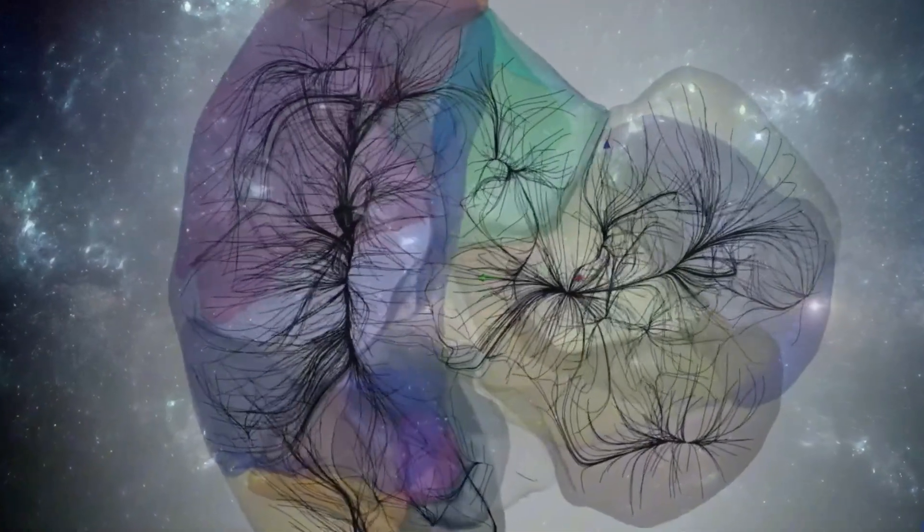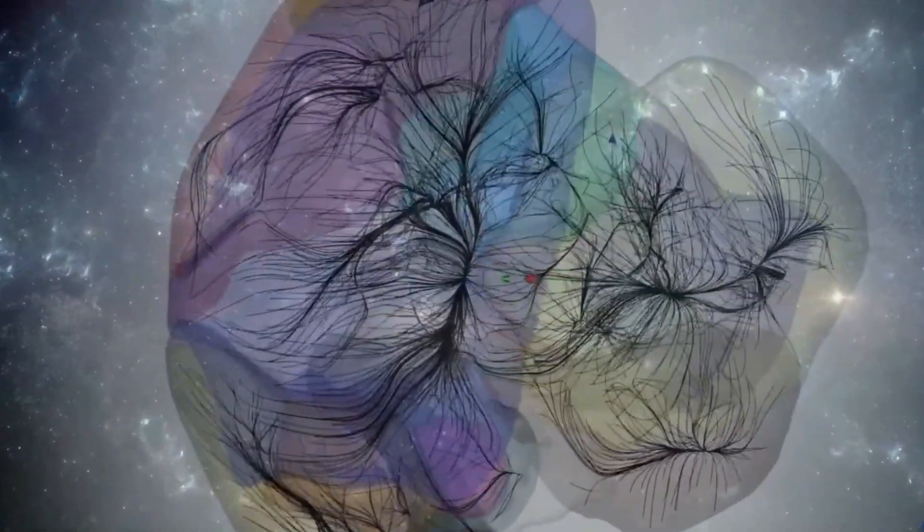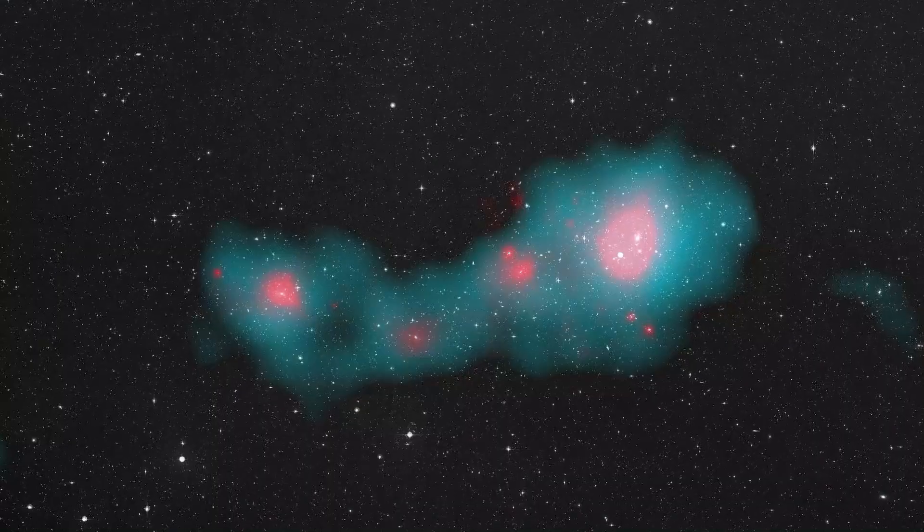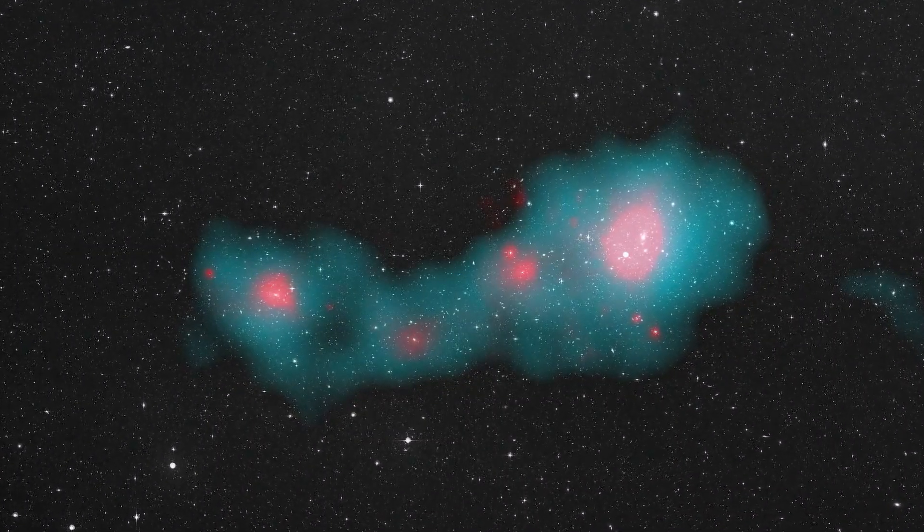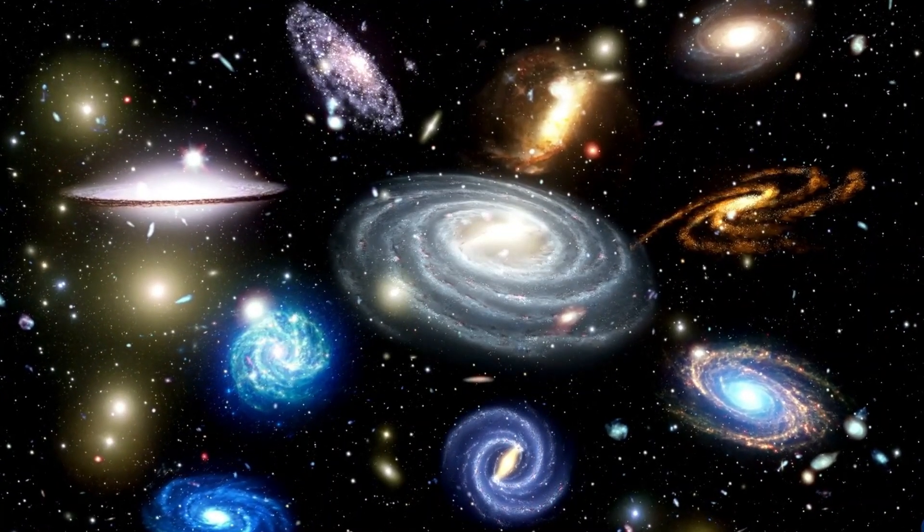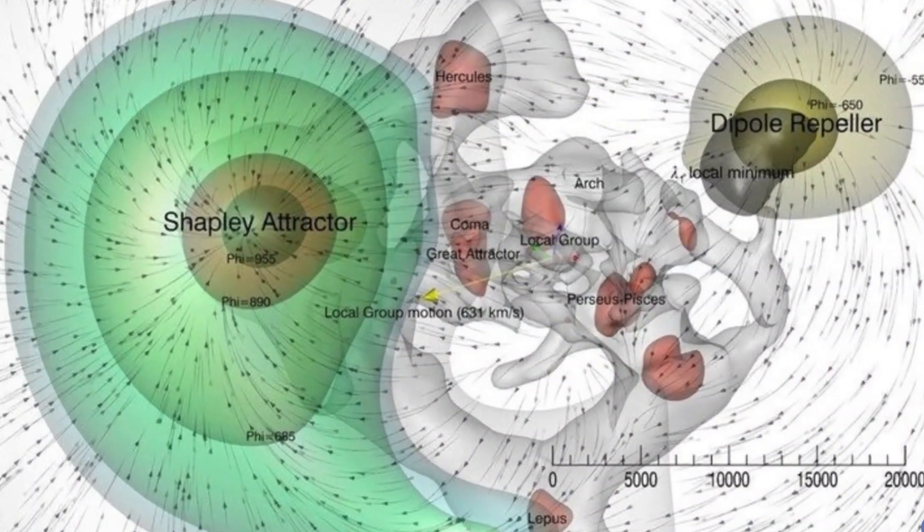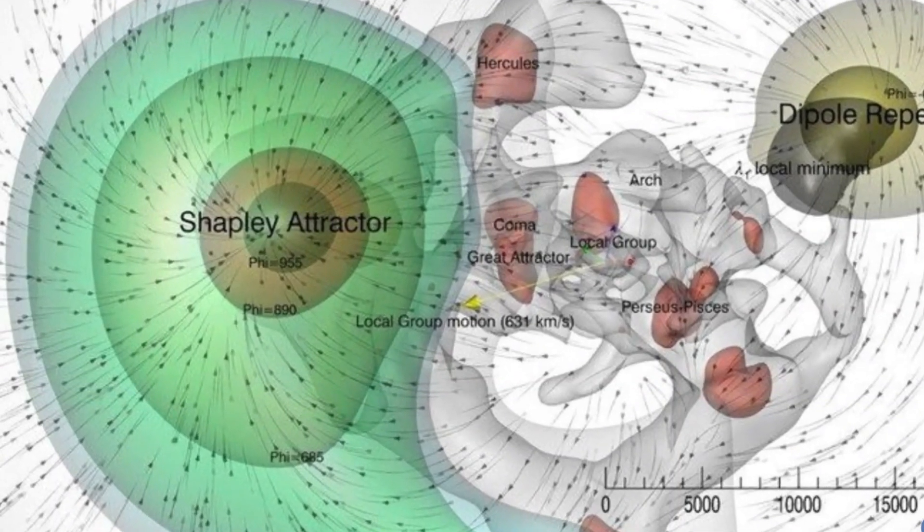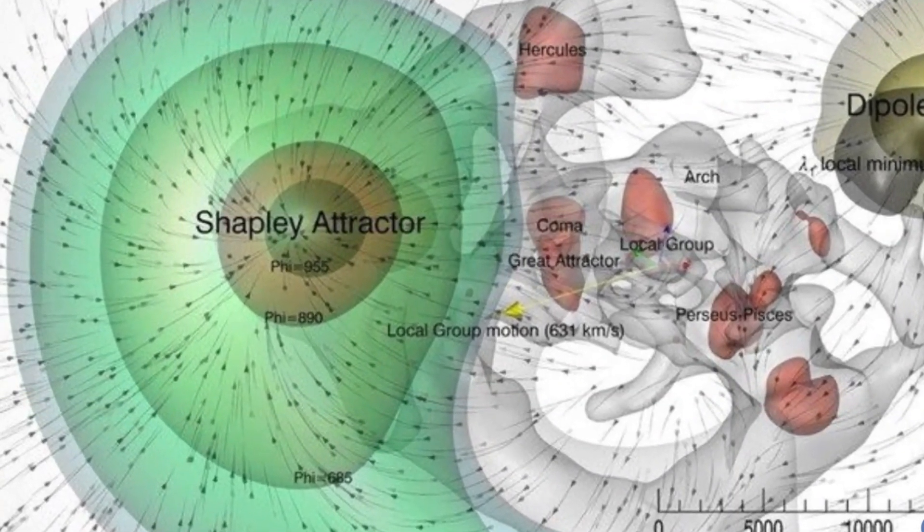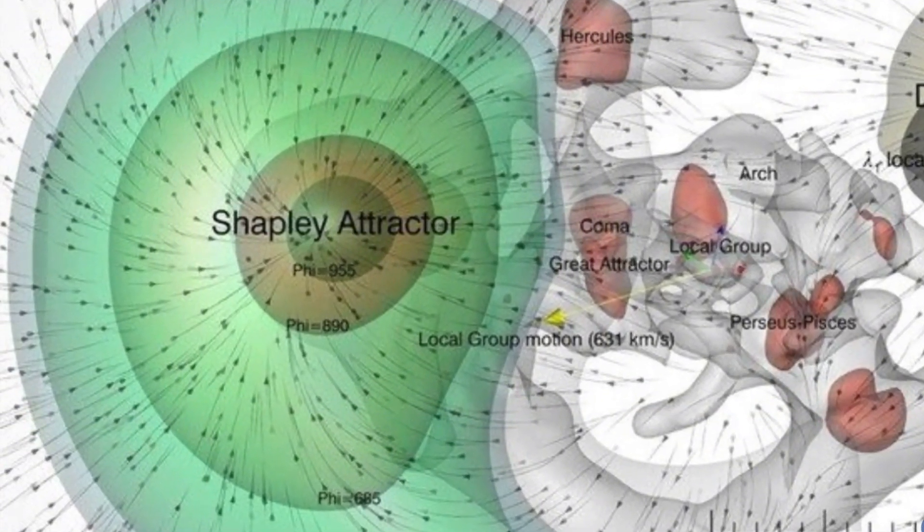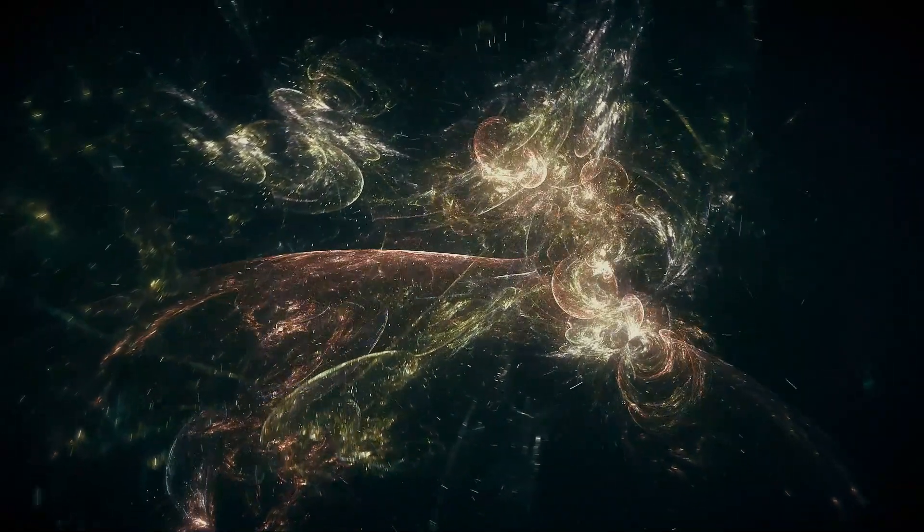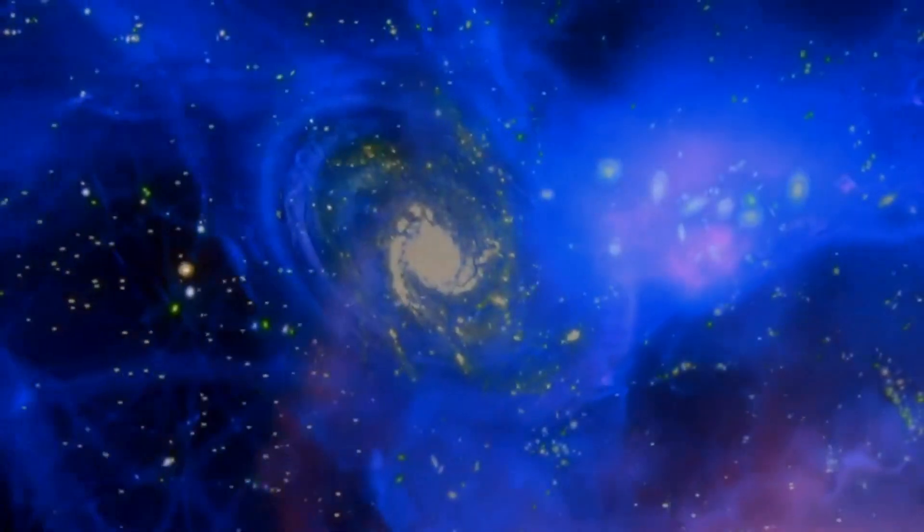The gravitational tug of war between different basins makes this discovery even more intriguing. The Shapley concentration, for example, lies in the direction toward which the Milky Way and its neighboring galaxies are moving. This suggests that Shapley's immense mass exerts a significant gravitational pull on our galaxy, which could be why we're drifting toward it. Mapping these movements is crucial because it helps scientists understand the large-scale distribution of matter in the universe, including elusive dark matter, which doesn't emit light but still affects galaxy motion.